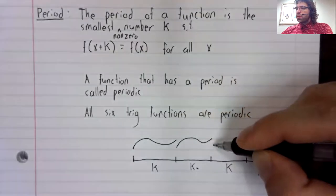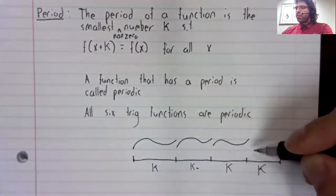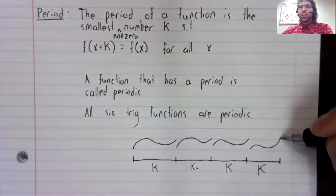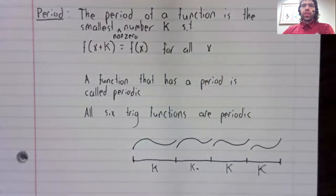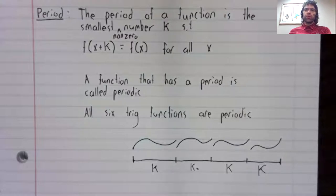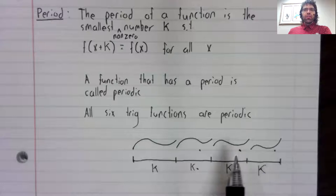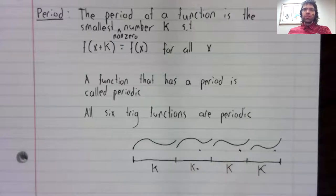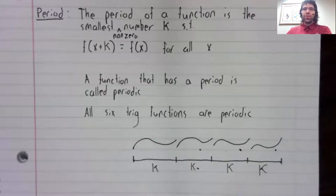Then the graph is just going to be the same shape repeated over and over again. So here's a periodic function other than the sine and the cosine.